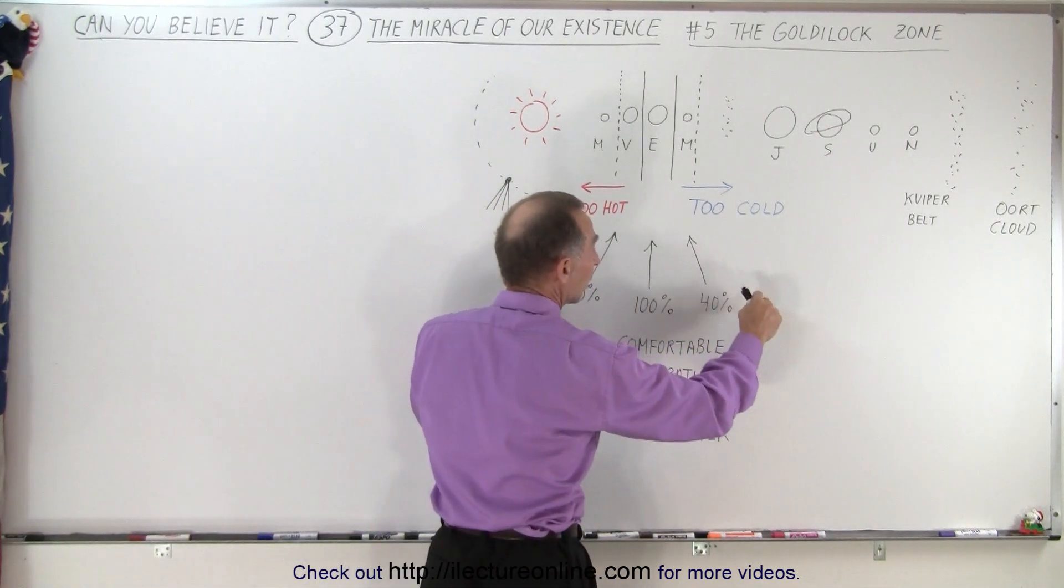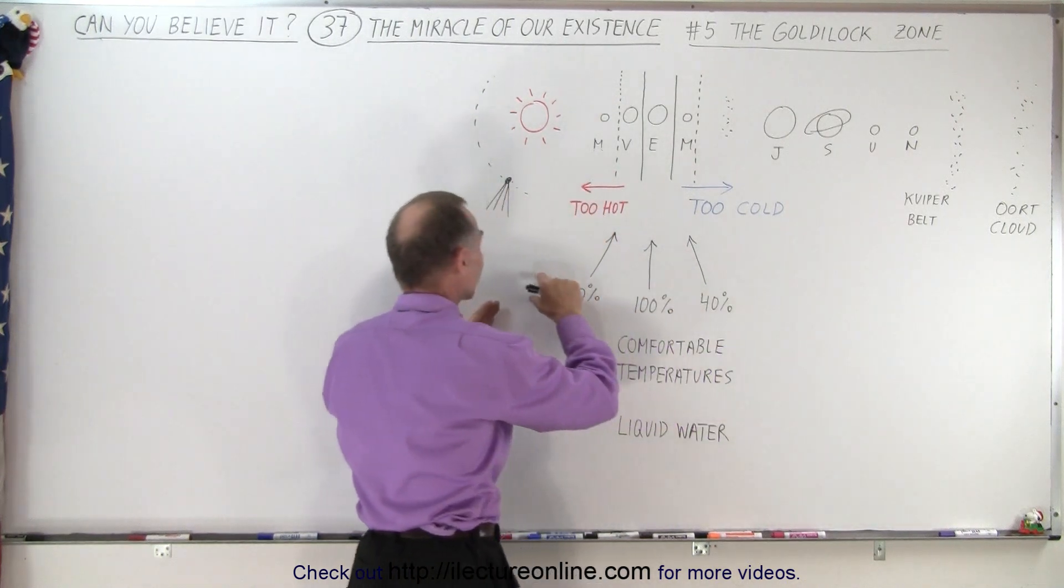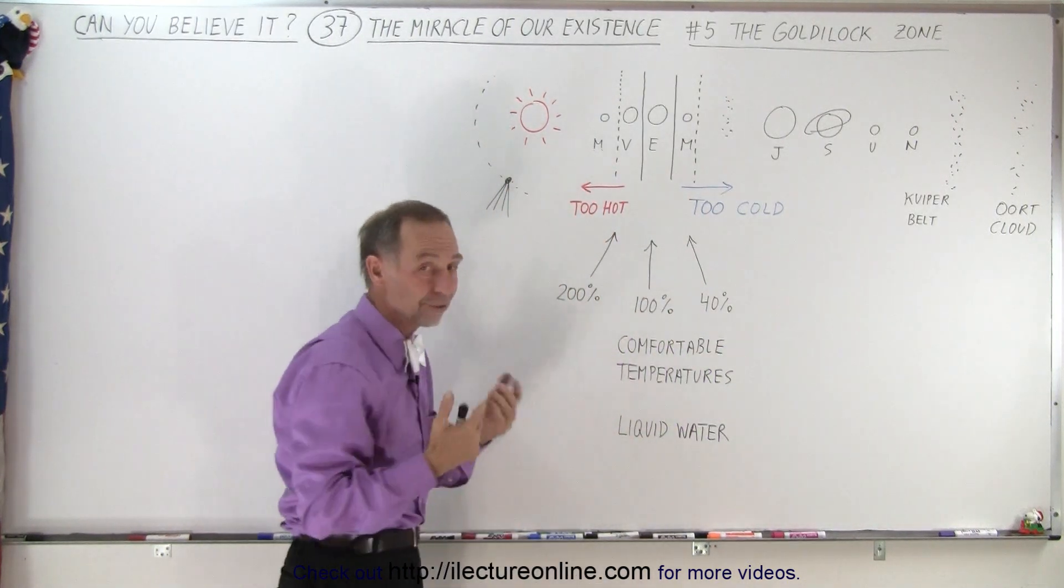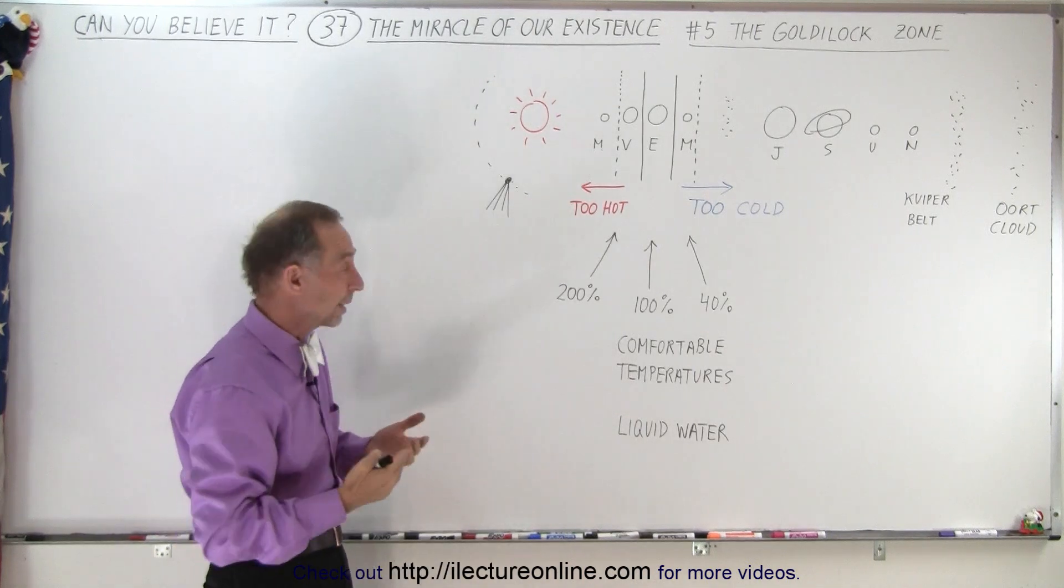So you can see that if you go much further out, the amount of sunlight you get is far less. And over here, the amount of sunlight you get is far greater. It would be way too hot and way too cold.